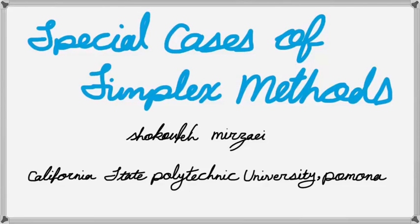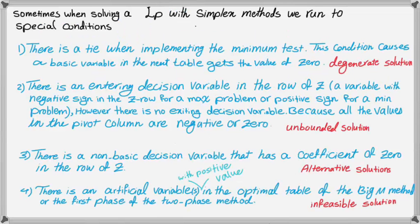Hello everyone, this is Mirzai from Cal Poly Pomona. In this series of videos related to the special cases of simplex methods, we are in the third video where we explore the third special condition, which is an alternative solution to your linear programming problem. This condition happens when there is a non-basic decision variable that has a coefficient of 0 in the row of Z. Let's explain this condition with an example.